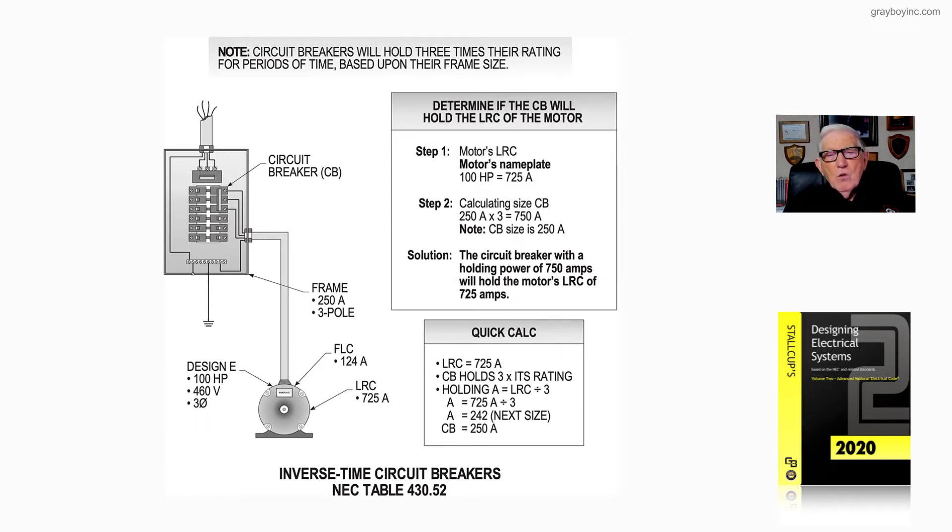Now a quick way to do it is in the quick calc. Lock rotor current, 725. You can round that up to an even unit of 10: 730 times six for code letters A through G on the motor.